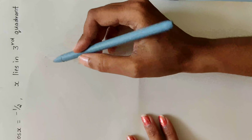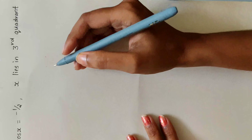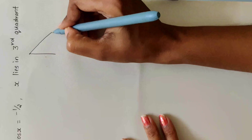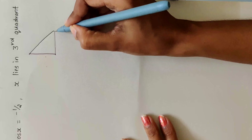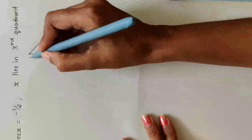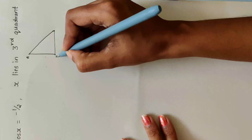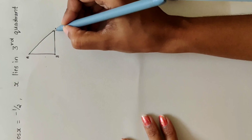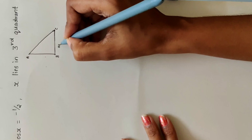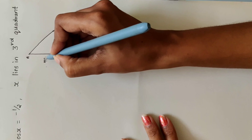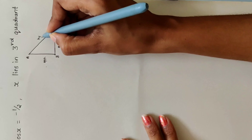I will teach you a simple trick to find all the other five trigonometric functions. Let's start. Basically, draw a simple triangle — name it as A, B, C. This portion we call the base or adjacent, this is the opposite side, and this is the hypotenuse.